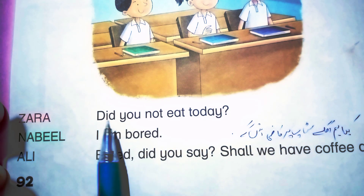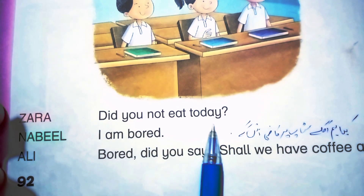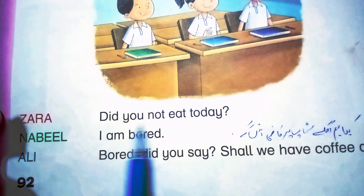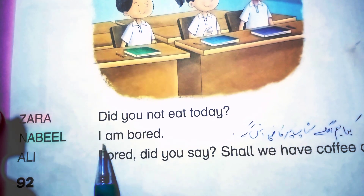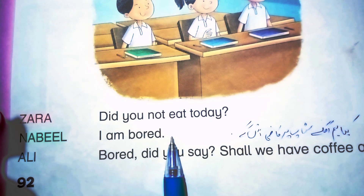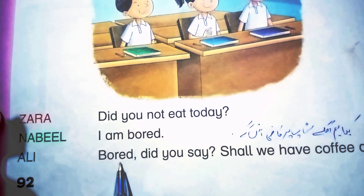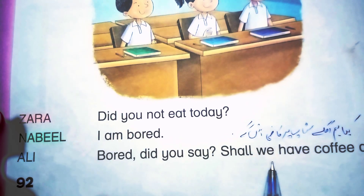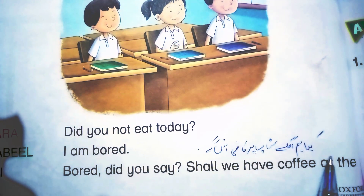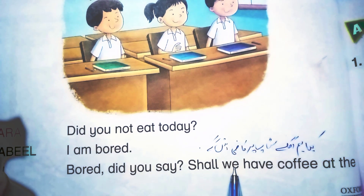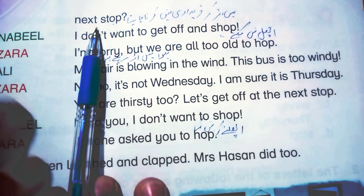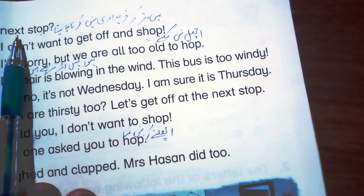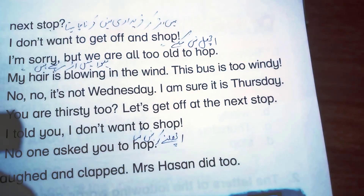Because they cannot hear each other well, they say one thing and hear another. Zara said, 'Did you not eat today?' Nubil said, 'I am bored.' Then Ali said, 'Bored? Did you say bored? Shall we have coffee at the next stop?'